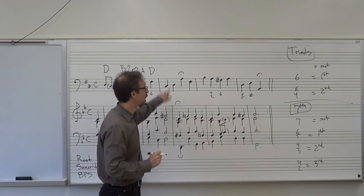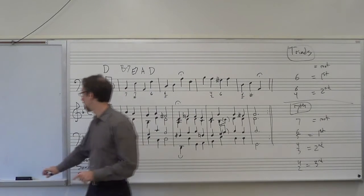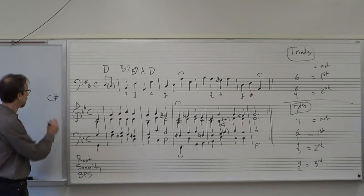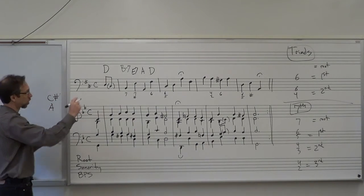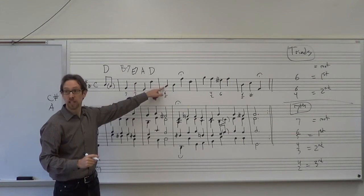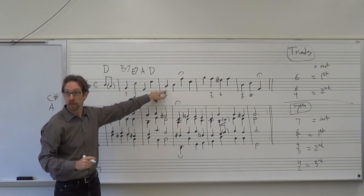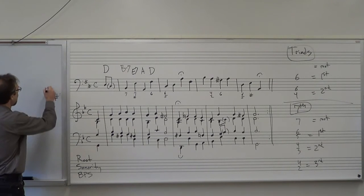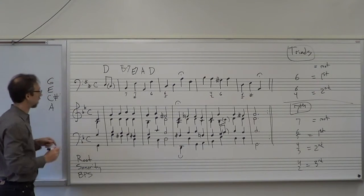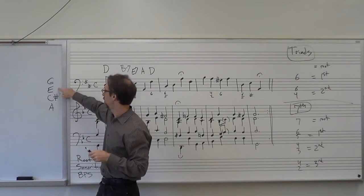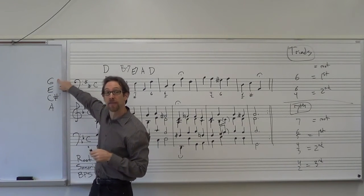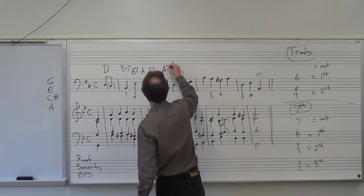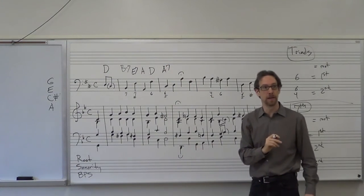So when I see 6-5, I know it's first inversion of a 7th chord. My note is C sharp. Since it's first inversion, I go down a third to find my root — that's A. Then I stack from there: A, C sharp, E, G. Analyzing: major third, perfect fifth, minor seventh — that's a major-minor seventh chord. So A7 would be my chord.